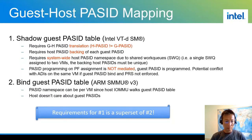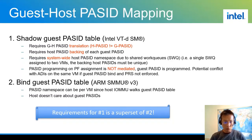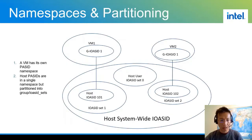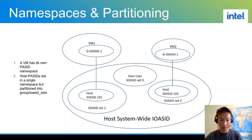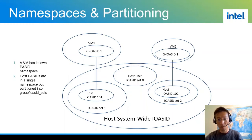If you look at the second approach — bind guest PASID table — it's much simpler, because the guest simply owns the PASID table and the host simply doesn't care. IOACID is a limited system-wide resource; in the PCIe spec, PASID is 20 bits, so we must partition them into groups to support multiple users. In this example we have three IOACID groups called IOACID sets.